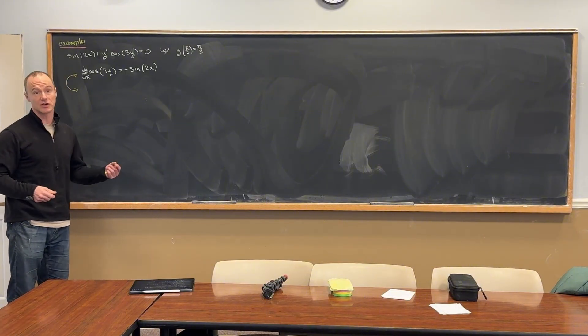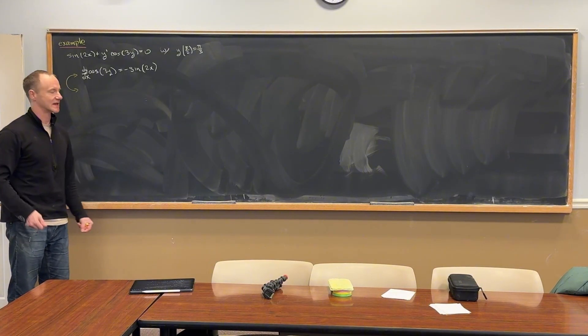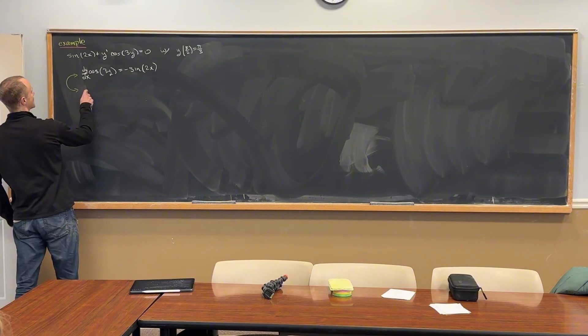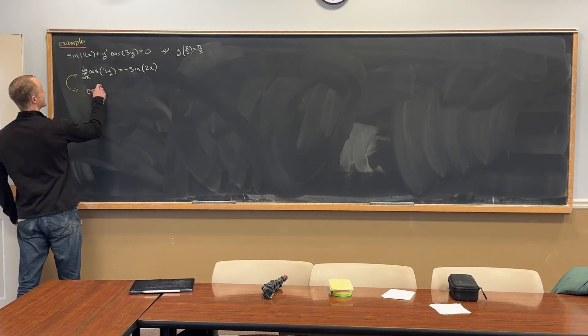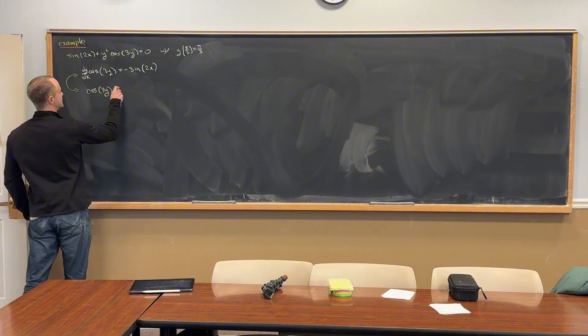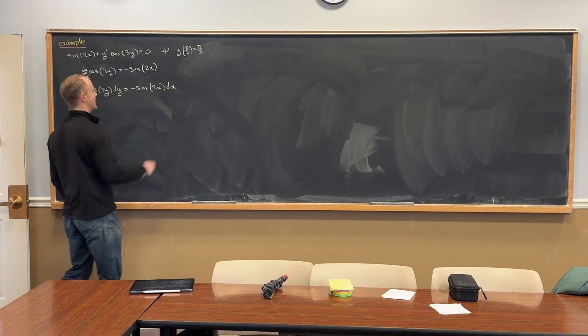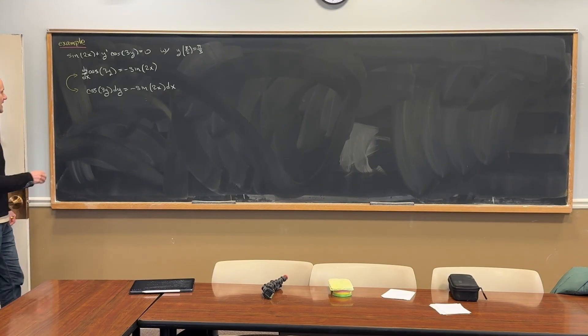Okay, so let's see. That will give us something like this: we'll have the cosine of 3y dy is equal to minus sine of 2x dx. And now we can simply take the antiderivative of both sides.